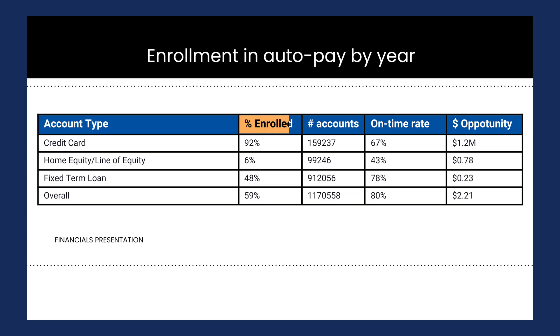Another reason to use a table would be you have multiple units of measure that you need to get across. Let's say it's the percent enrolled, which we're currently showing, but it's also the number of accounts or perhaps the dollar opportunity associated with each. A table can be a nice way to provide all of these metrics in a smaller space.